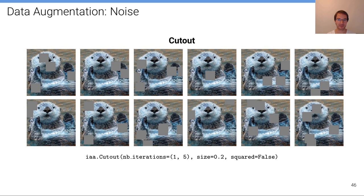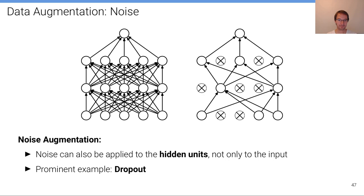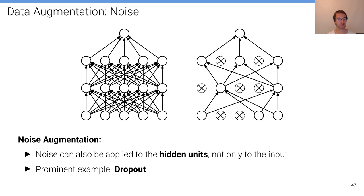We can also apply more structured noise by covering entire regions within the input image — this is called cutout. You can apply noise not only to the inputs of the neural network but throughout the network itself. A prominent example is dropout, where certain neurons are dropped with some probability. Alternatively, you can add noise to individual units, which builds robustness not just at the input feature level but also at intermediate levels where higher-level representations are established inside the neural network.